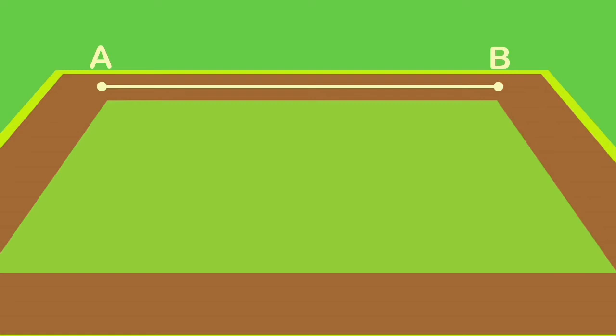We can even say that a line segment is a part of a line which has a fixed length. The given line segment can be read as line segment AB or BA. It can be written as segment AB or segment BA.